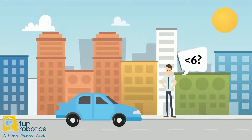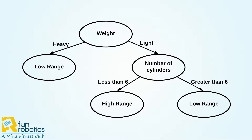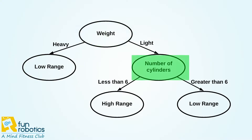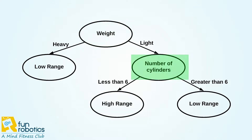If the number of cylinders is less than six, then it's high range. Otherwise, it has a low range. To conclude, any car that is heavy will always have a low range. And if a car is lightweight and has fewer than six cylinders, it will have a high range. A car that is lightweight and has more than six cylinders will have a low range.